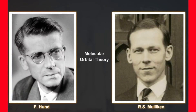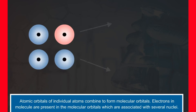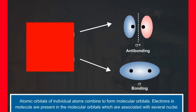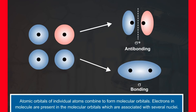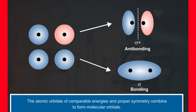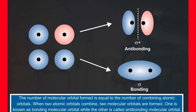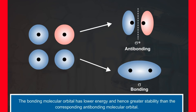Molecular orbital (MO) theory was developed by F. Hund and R.S. Mulliken in 1932. The basic idea of MO theory is that atomic orbitals of individual atoms combine to form molecular orbitals, and electrons in a molecule are present in these molecular orbitals associated with several nuclei. Atomic orbitals of comparable energies and proper symmetry combine to form molecular orbitals. The number of molecular orbitals formed equals the number of combining atomic orbitals. When two atomic orbitals combine, two molecular orbitals are formed: a bonding molecular orbital and an antibonding molecular orbital. The bonding molecular orbital has lower energy and hence greater stability than the corresponding antibonding molecular orbital.